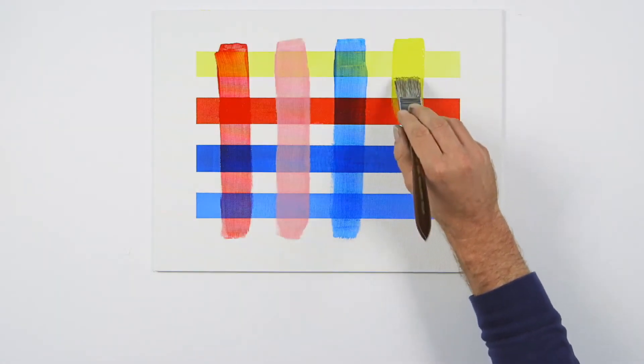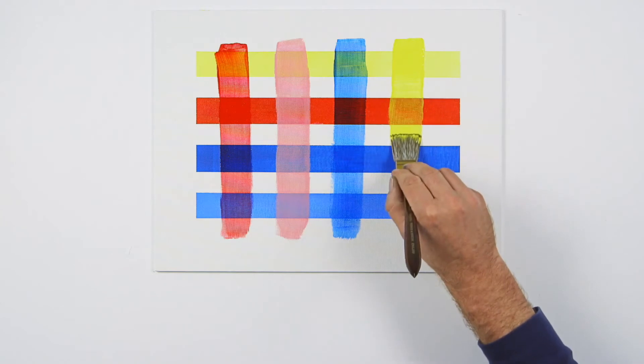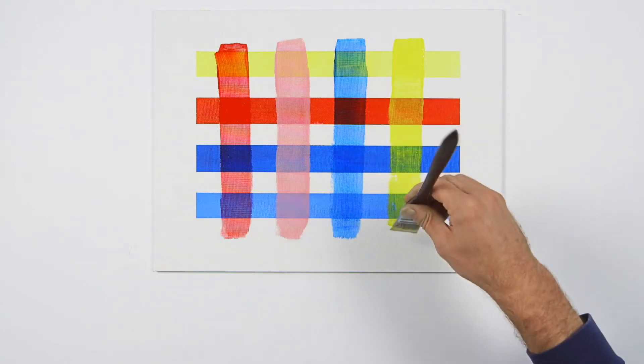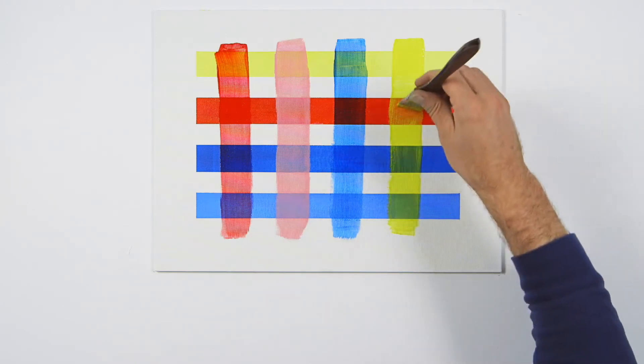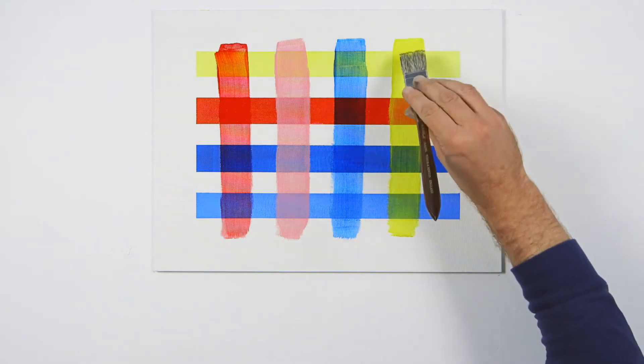Optical mixing has its own advantages as well. One of which is that by relying on layering transparently or semi-transparently, some depth can be created in the painting.